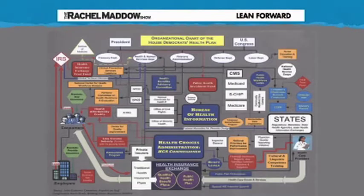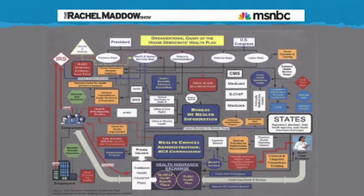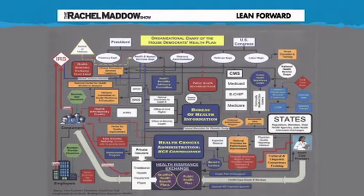Consider a graphical representation of some issue that is made to look deliberately complex in order to scare you about that issue. This scare chart is called the organizational chart of the House Democrats' health plan, otherwise known as Obamacare. This was put together by House Republicans back in the health reform debate days. Look how complicated — isn't it awful? Let's add more boxes and lines to make it seem even worse and more alienating.